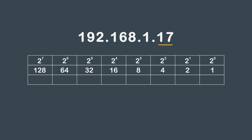The last octet is 17. The blocks 128, 64, and 32 are too large. But we can take 16 from 17, so we place a 1 in the 16 block and a 1 in the 1 block to finish up the number.